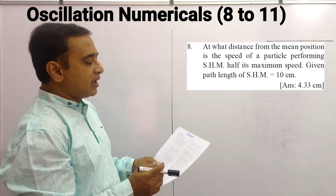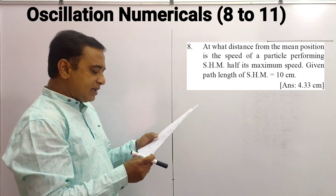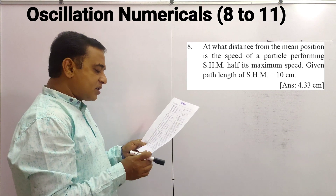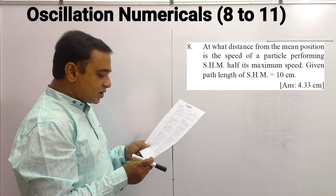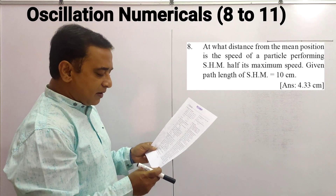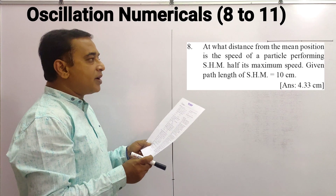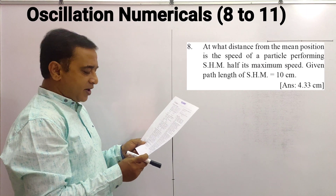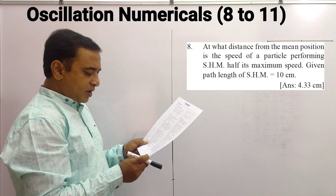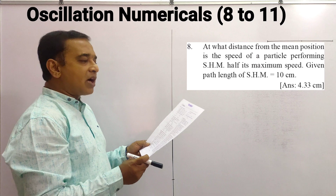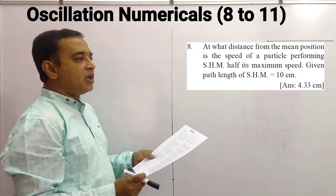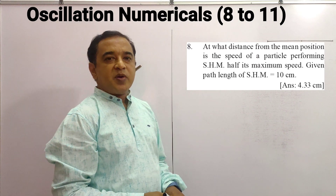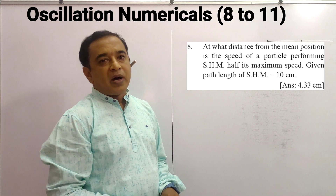Let us take problem number 8: at what distance from the mean position is the speed of the particle performing simple harmonic motion half its maximum speed? Given the path length of simple harmonic motion is 10 centimeter. It is better to know the path length.